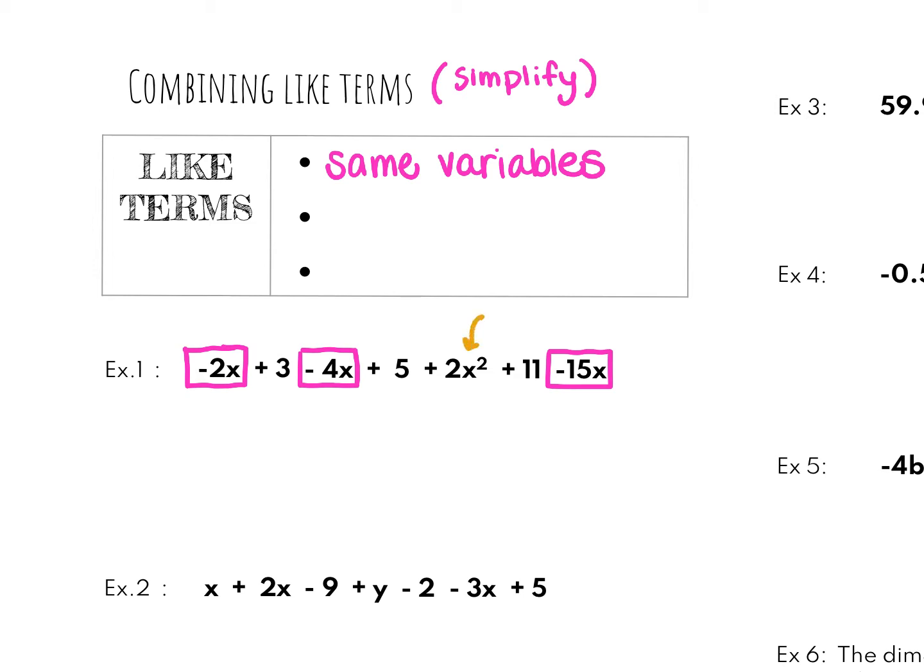Now you might be wondering about this x squared. Well the second part of having like terms is they also have to have the same exponents. So because this 2x squared has a different exponent, I'm actually going to circle it. I'm going to give it a different shape. And now with like terms, all I have left here is my constant. So I'm going to use a third shape. I have 3, I have 5, and I have 11. These are all positive. So constants can always be combined.